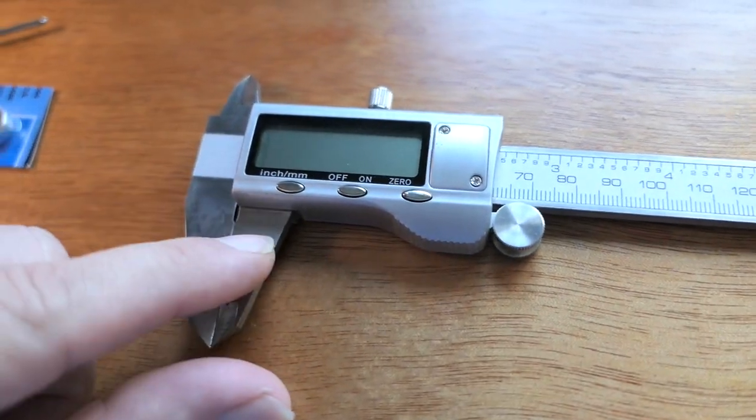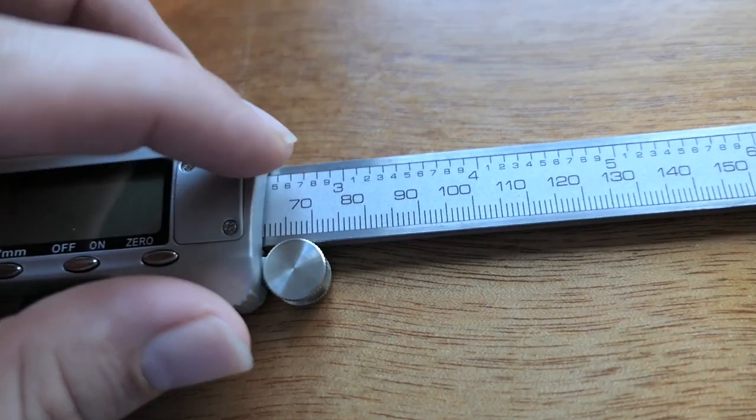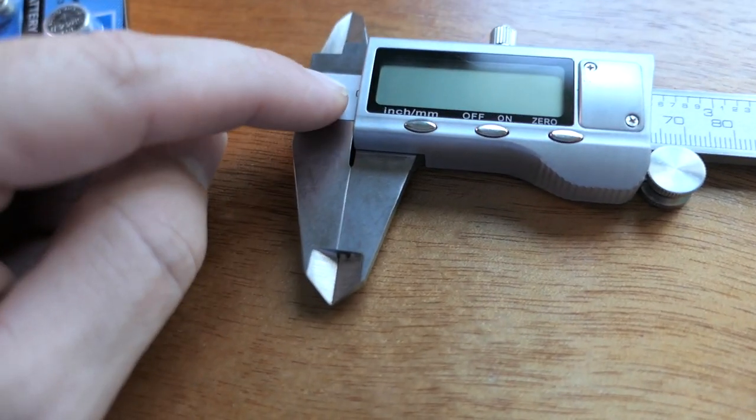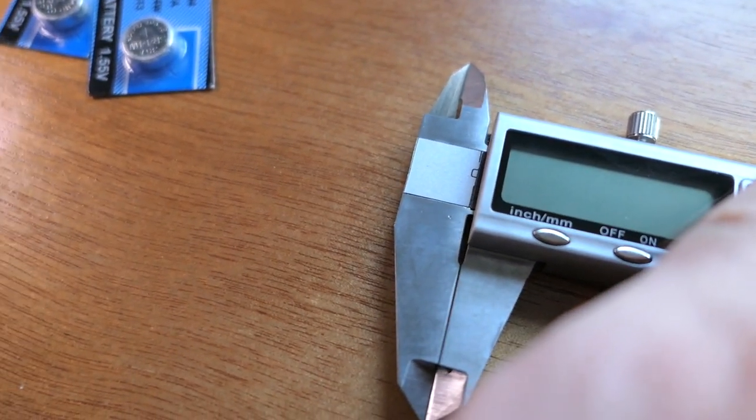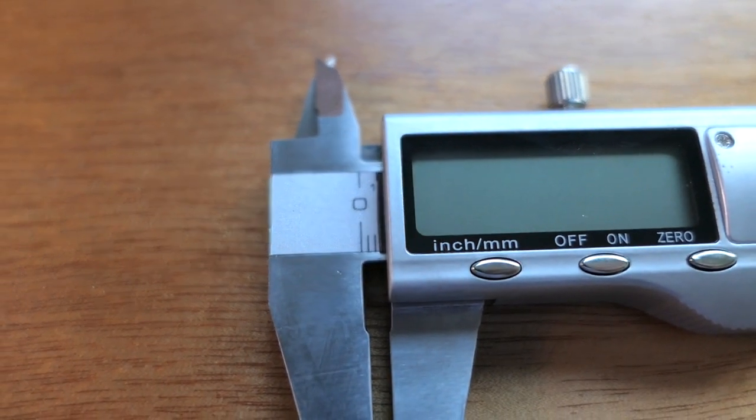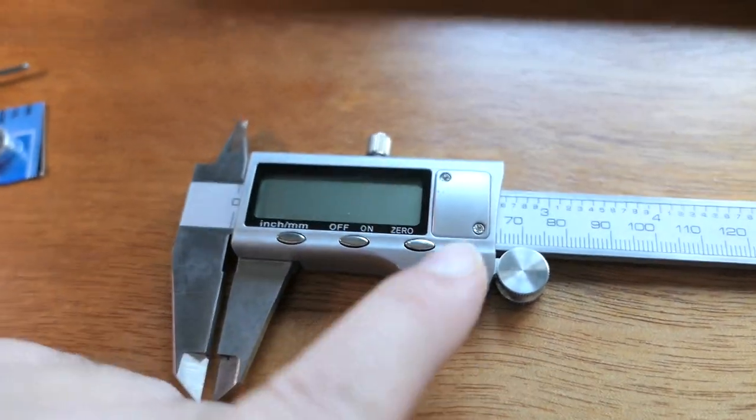So the cool part is that not only is it digital, but you also have an actual numbering system here. So if you didn't want to use the digital part of it, you technically didn't have to. So here it looks like we're right at one, two and a half millimeters. All right, so I guess we need to put the battery in.